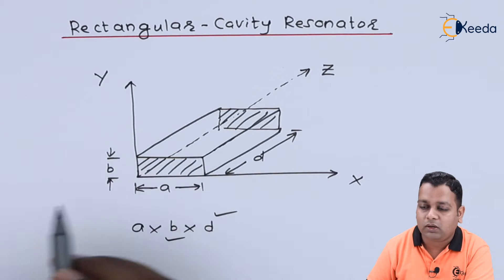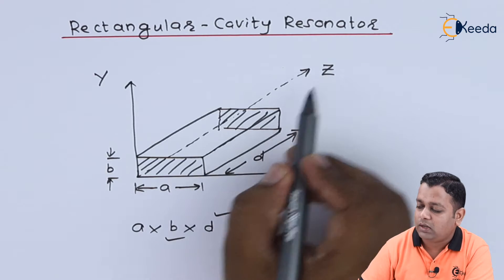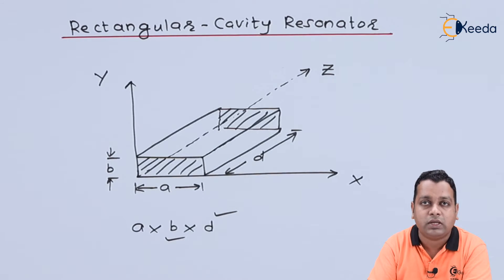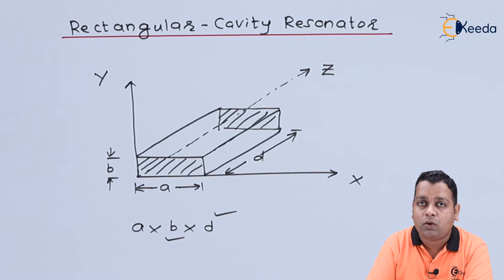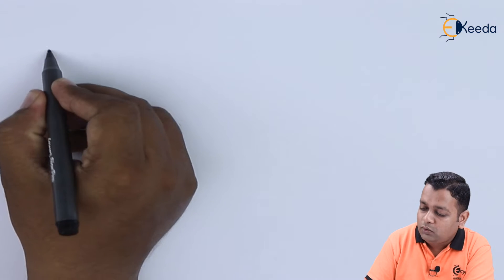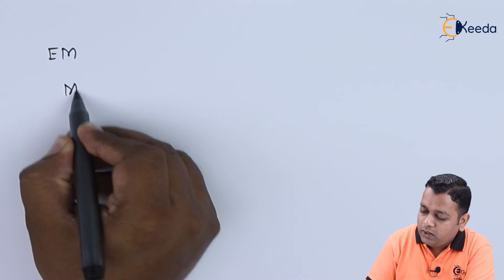Inside the hollow space of the rectangular cavity resonator, excitation can support either TE mode or TM mode, with harmonic variations along the z direction subject to boundary conditions. The analysis begins by considering the wave equations for the rectangular waveguide that has been converted into a rectangular cavity resonator. All electromagnetic fields associated with the cavity resonator must satisfy Maxwell's equations.